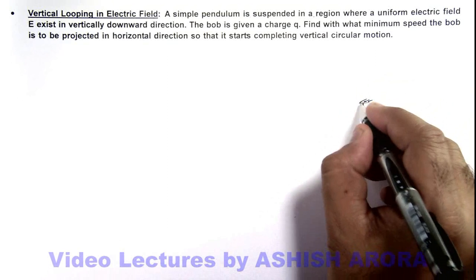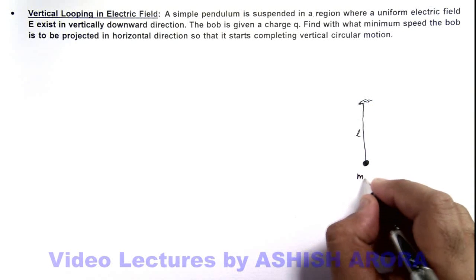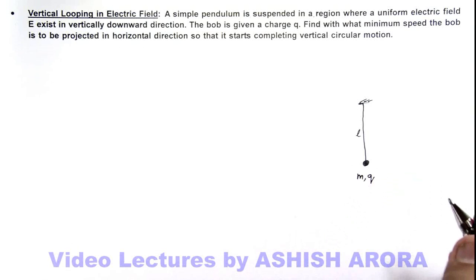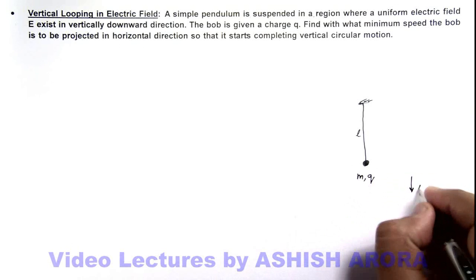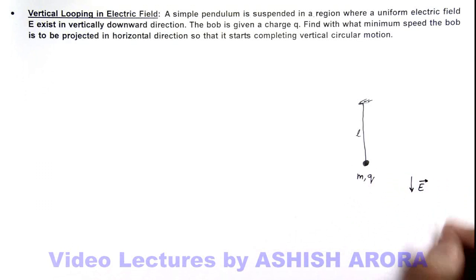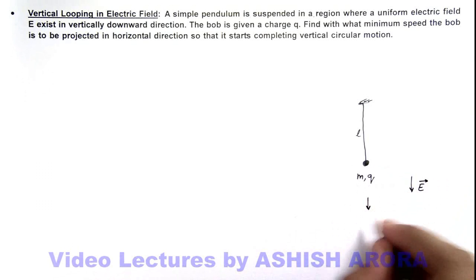If there is a pendulum of length l, bob mass m, and a charge q, and here in downward direction an electric field E also exists, so this bob is experiencing the downward force m g plus q E.